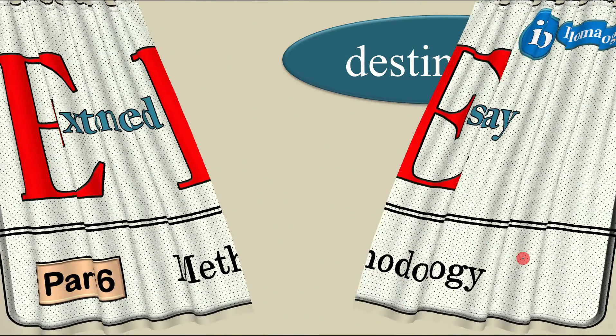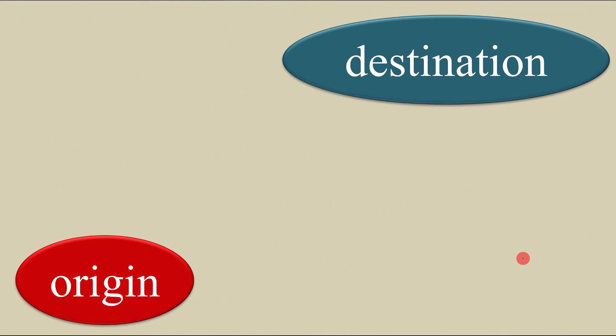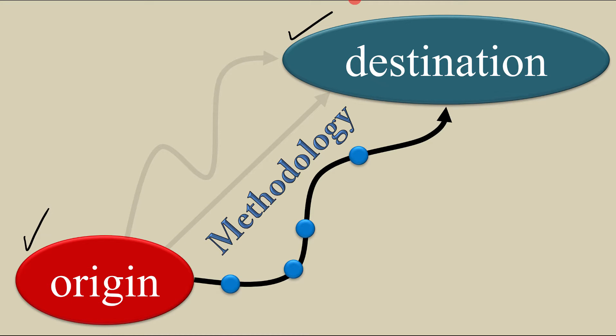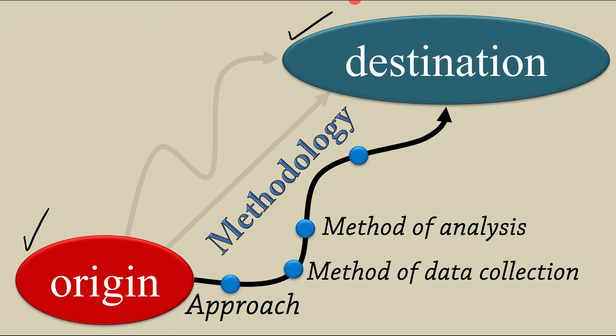If I model your essay as a journey, it starts from an origin goes to a destination. You will have different choices to your destination, different roads, possible roads. Methodology is exactly talking about the special road you will select to your destination. It will have four different modules: approach, method of data collection, method of analysis, and evaluation and justification.